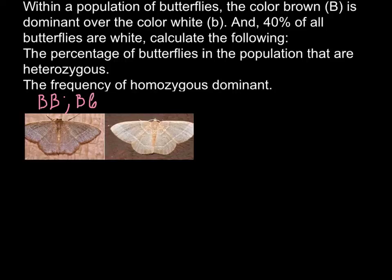Both these two genotypes would produce one phenotype, that is brown. And the white phenotype can be produced by the homozygous recessive condition, that is small b small b. In order to solve this problem, we are going to use the Hardy-Weinberg formula.